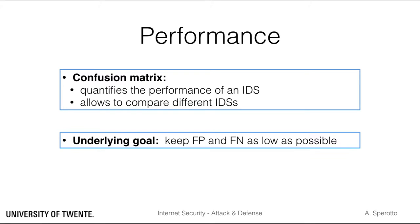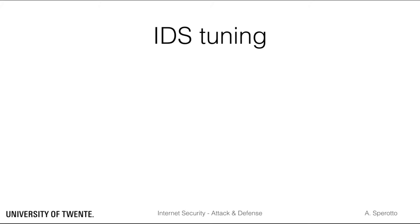Now that we know how to measure classification performance, let's think about how we can use this to improve network security. The underlying goal is to keep both false positives and false negatives as low as possible. From the point of view of a network administrator, false positives are costly since alerts need to be manually checked. On the other hand, false negatives constitute a security risk, which you may or may not be willing to take depending on which attack goes undetected. This brings us to the tuning of an IDS. Although we might like to think that an IDS is plug-and-play, reality shows this is most likely not the case, since certain characteristics of attacks and normal traffic may differ across networks.